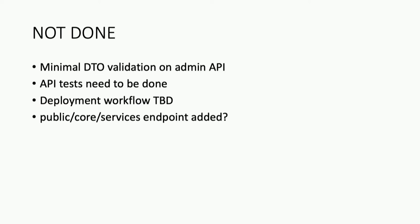I've done minimal validation on the data transfer objects for the admin API — it's not going through every field to make sure it's correct, mostly just validating the module framework with the tag, identity, module type, and main element. API tests still need to be done. The deployment workflow is TBD — I'm hoping to push this to something like Amazon Elastic Container Service and deploy it on AWS. I'm also thinking I should add a public core services endpoint that acts as an index telling you what all the other endpoints are, what filters are available, and so on.